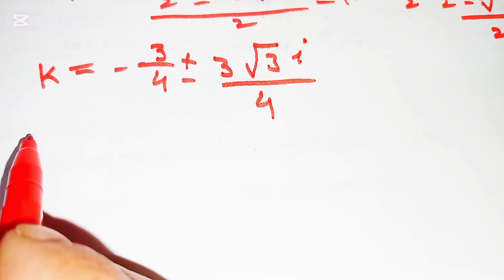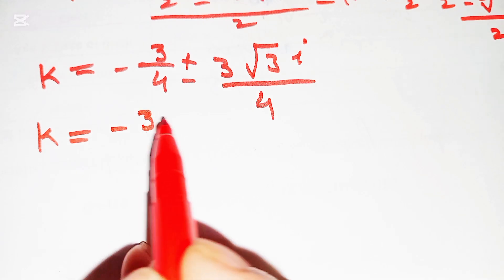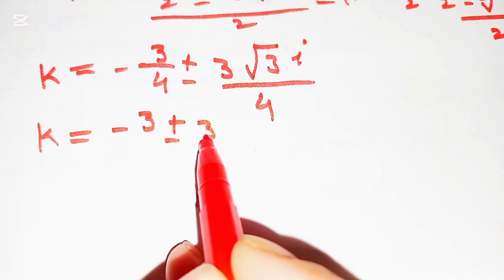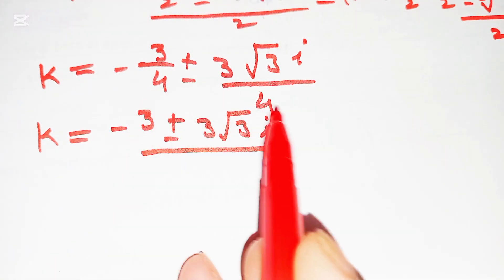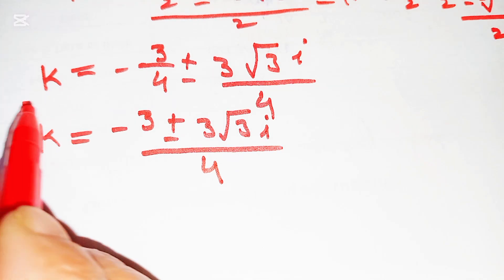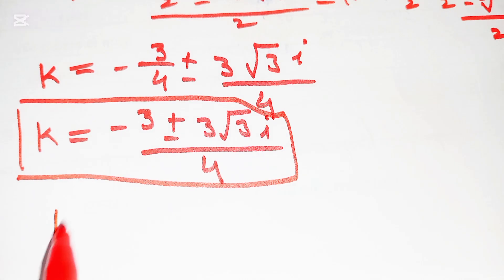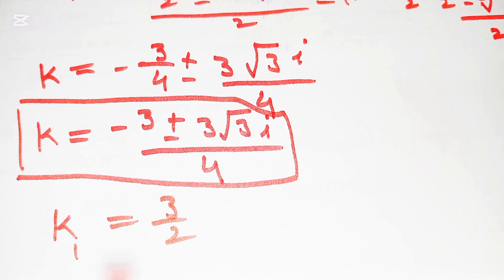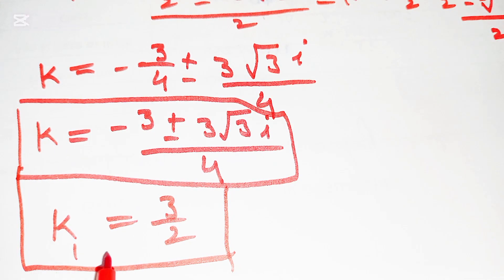Therefore the second value of k is (−3 ± 3√3·i) / 4. The first value of k is 3/2, and here are our final answers: first value k = 3/2, second value k = (−3 ± 3√3·i) / 4.